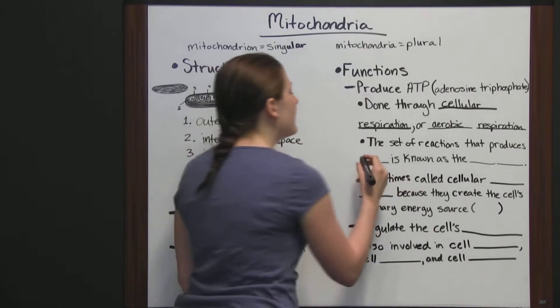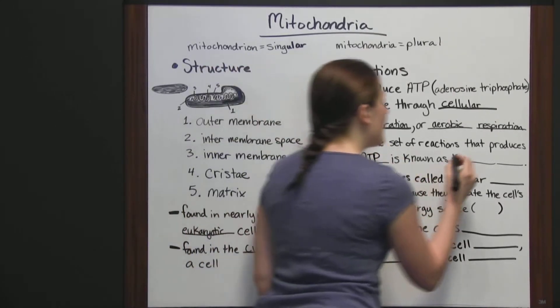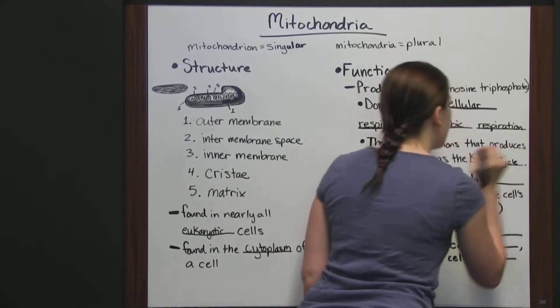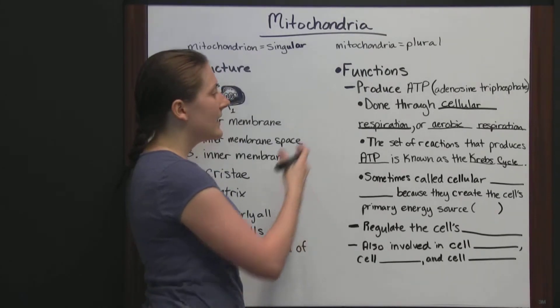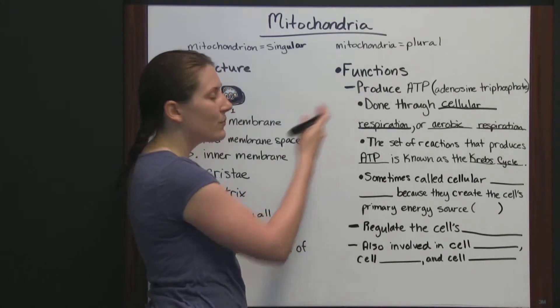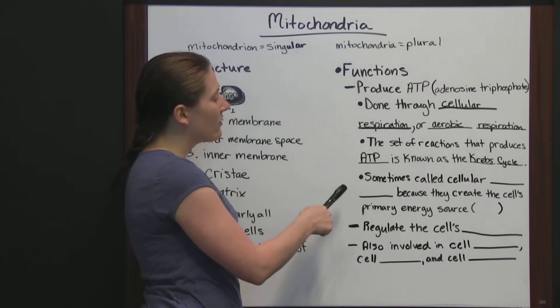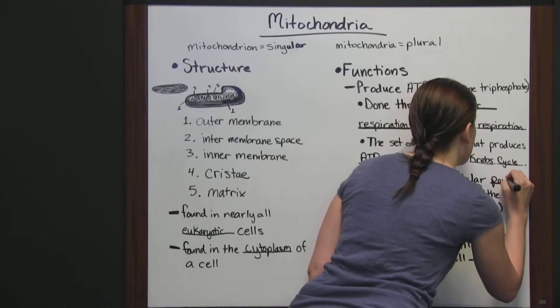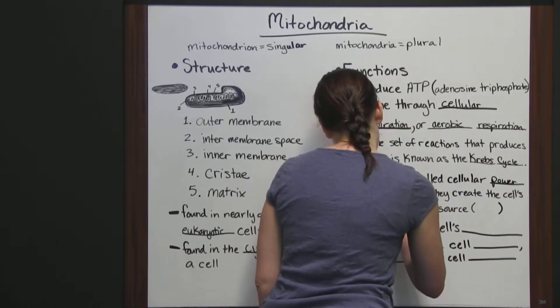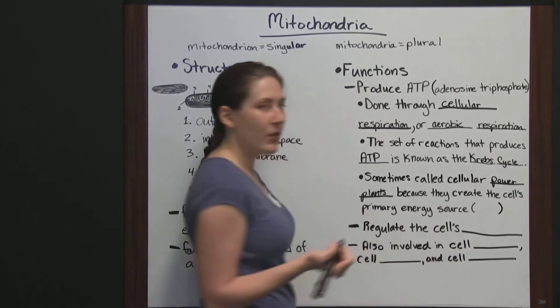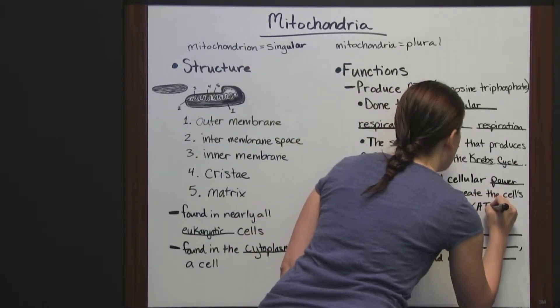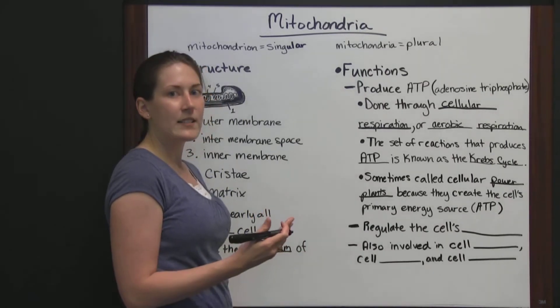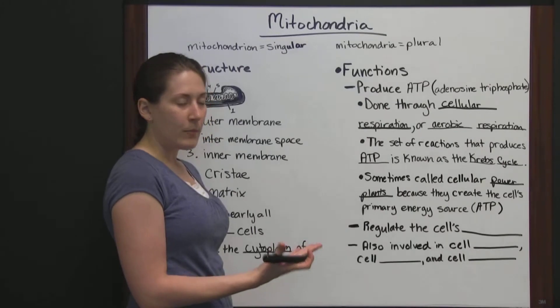Now, the set of reactions that produces ATP is known as the Krebs cycle. So, the mitochondria is involved in the Krebs cycle because it goes through some of those reactions to produce ATP. And the mitochondria is sometimes called cellular power plants or powerhouses because they create the cell's primary energy source, which is ATP. So, since they create the primary energy source that the cell has to use, they are called cellular power plants.